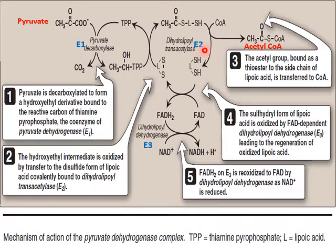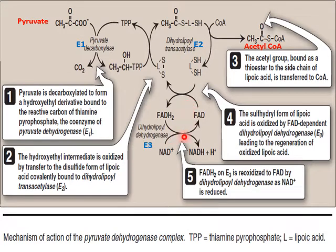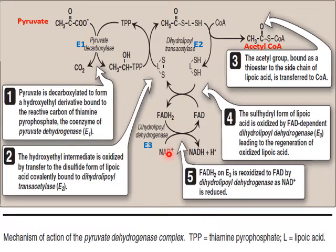Coenzyme A then reacts with this transient derivative. When coenzyme A binds to it, the acetyl portion and coenzyme A produce acetyl CoA, and lipoic acid is released in its reduced form. In the third part, catalyzed by E3 (dihydrolipoyl dehydrogenase), the reduced lipoic acid gives its hydrogen atoms to FAD, reducing it to FADH2, while lipoic acid is oxidized. FADH2 then gives its hydrogens to NAD, forming NADH.